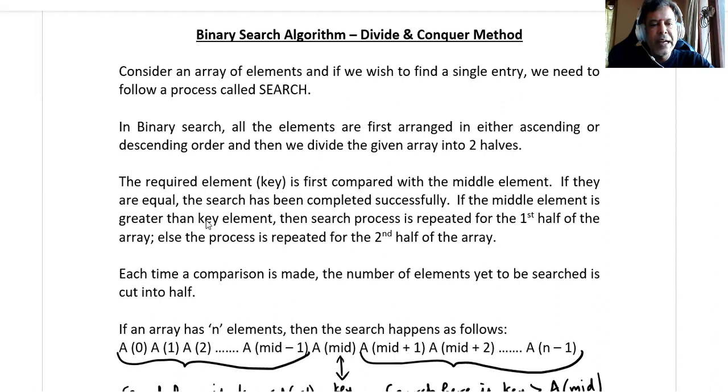If the middle element is greater than the key element, then the search process is repeated for the first half of the array. Otherwise, the process is repeated for the second half of the array. Each time a comparison is made, the number of elements yet to be searched is cut into half.